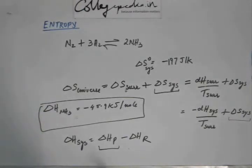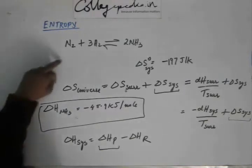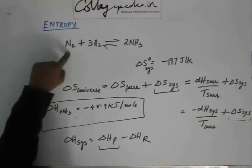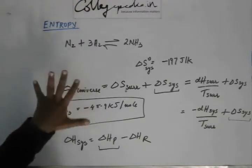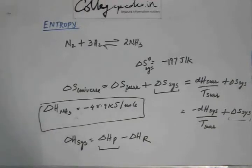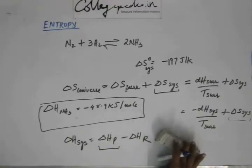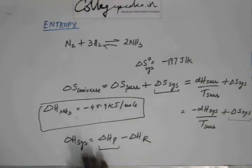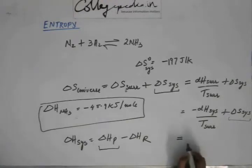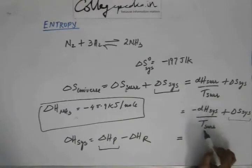Delta H of reactants is zero because delta H of N2 gas and H2 gas are zero. So delta H of reaction equals delta H of products minus zero. Multiplying delta H of ammonia by two gives delta H of system as minus 91.8 kilojoule per mole. From here we can calculate delta S of surrounding as delta H of system divided by temperature of surrounding.